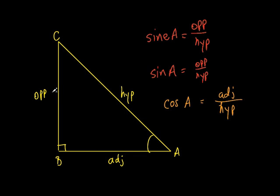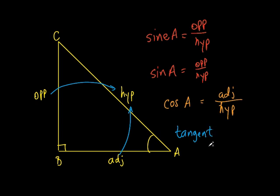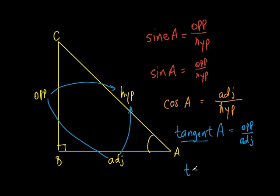We compared the opposite to the hypotenuse, and the adjacent to the hypotenuse. So what other ratio is left? The opposite and the adjacent. We have a word for that — it's called the tangent. We're dealing with angle A, so the tangent is the opposite over the adjacent. Instead of writing the whole word tangent, we shorten it to T-A-N. Some people say 'tan,' but normally we say the word tangent. So: tangent of A equals opposite over adjacent.